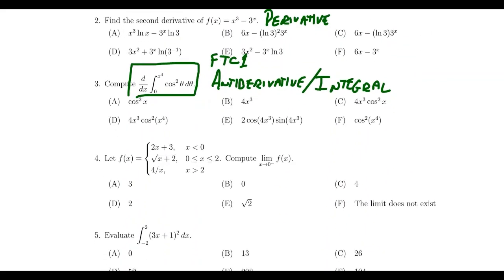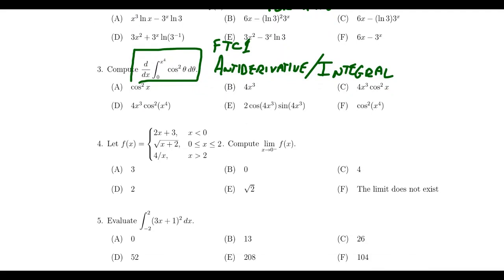Question number four will be another type of limit calculation, but this one's going to involve piecewise functions. Piecewise functions have more exotic limits than just general functions — as you're approaching zero from the left, does the approach from the right differ? Is the two-sided limit equal? In chapter two, we did limits of piecewise functions all the time and talked about continuity of piecewise functions. For question number four, be prepared to answer a limit question about piecewise functions like we saw on exam two.